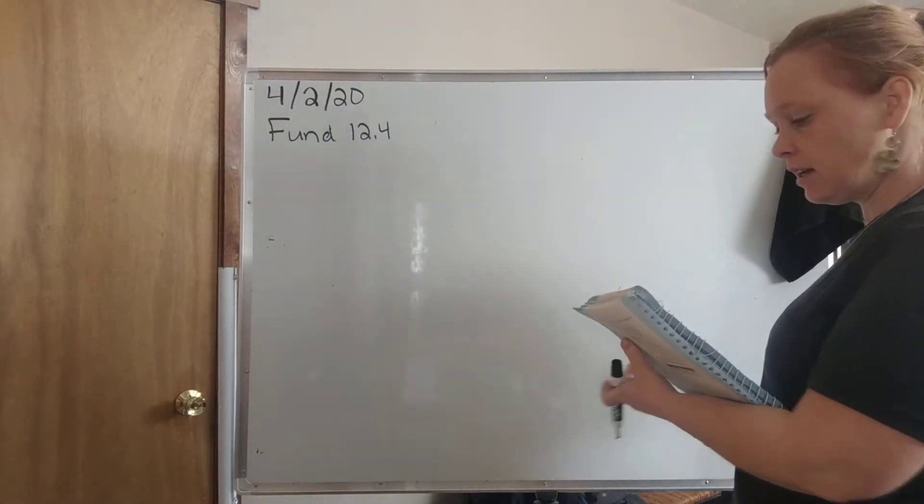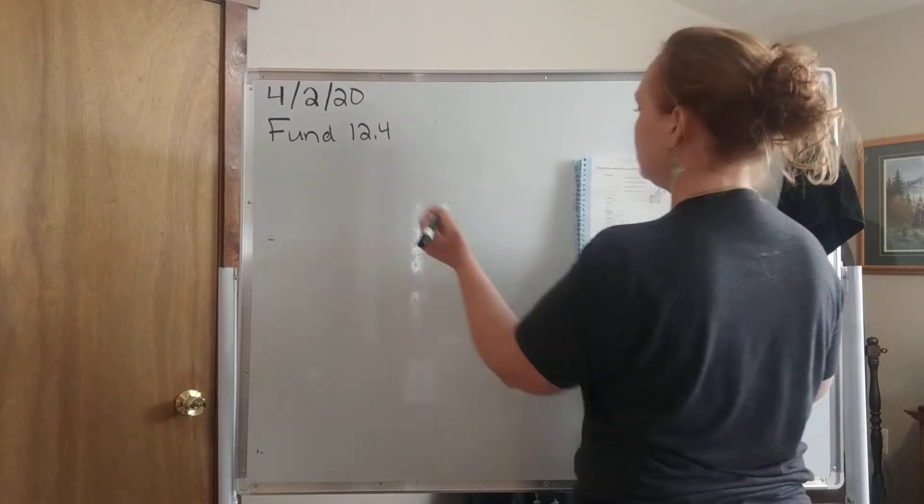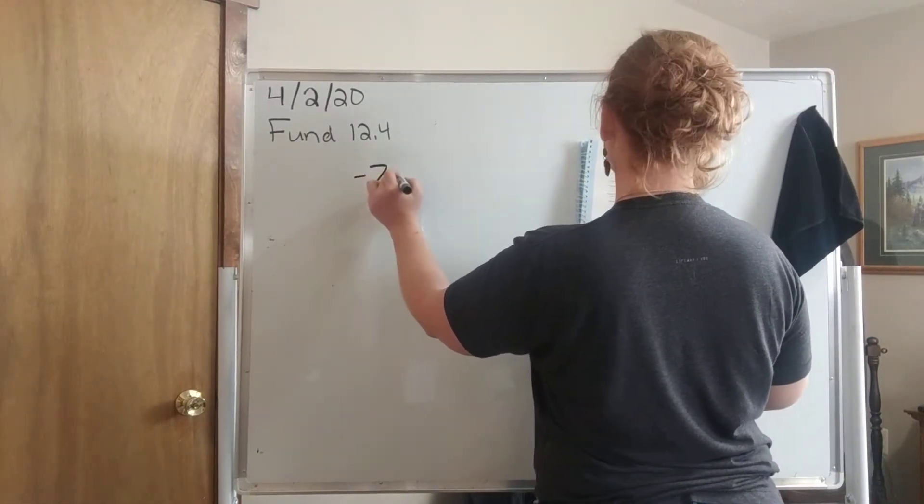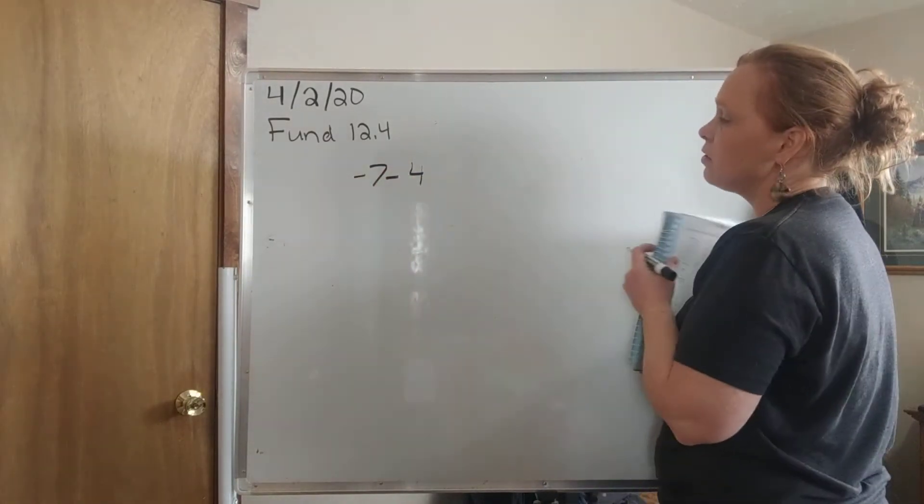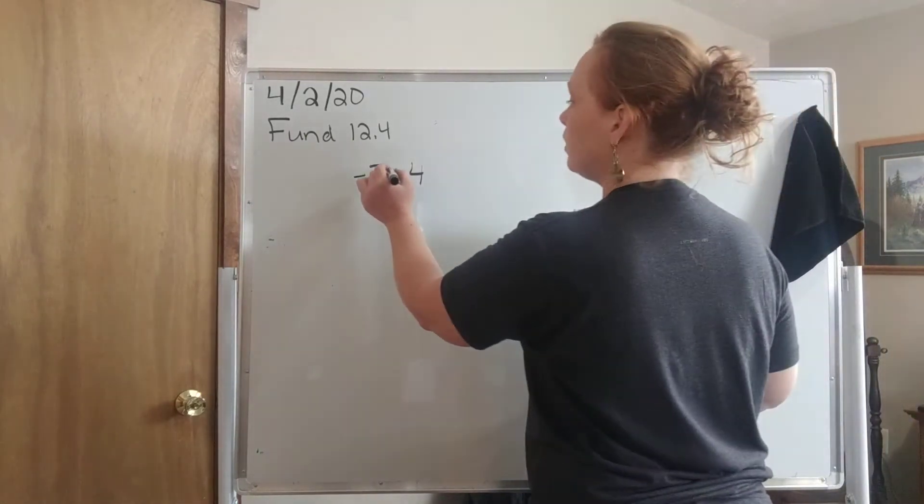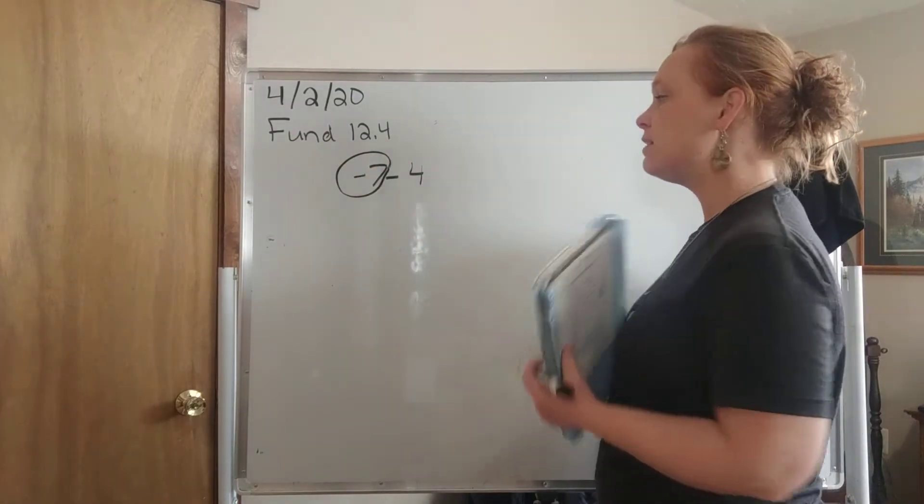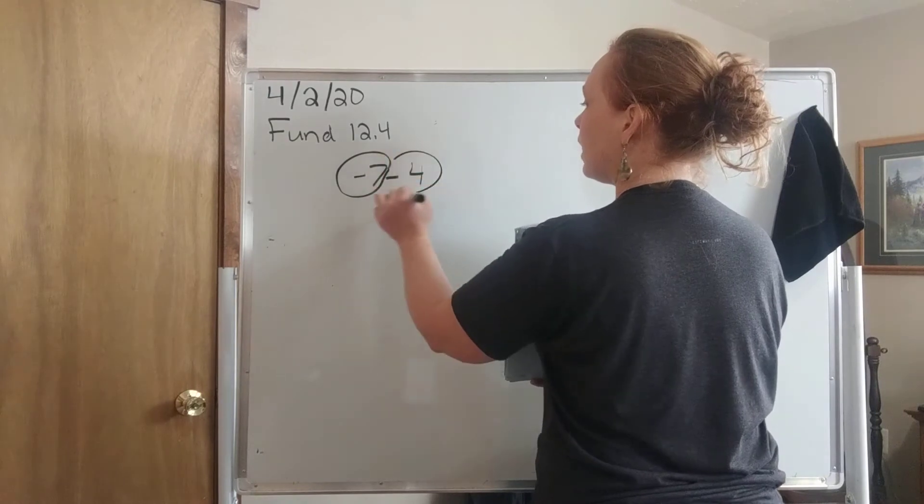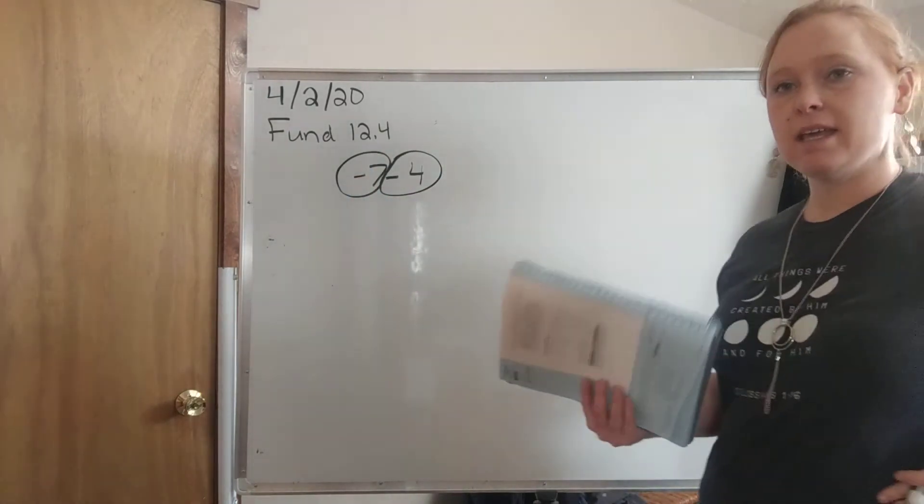So let's look at some of our examples on page 349. They give us example A of negative 7 minus 4. It's the same thing as the adding at this point. We want to say I'm actually combining a negative 7. And then instead of saying minus 4, we're just saying we're going to combine it with a negative 4.